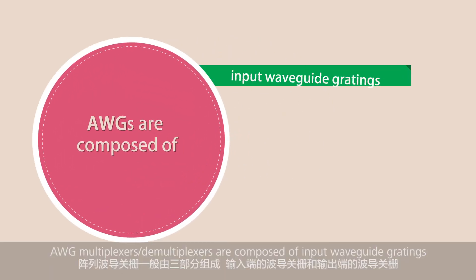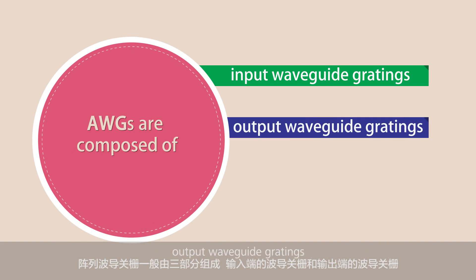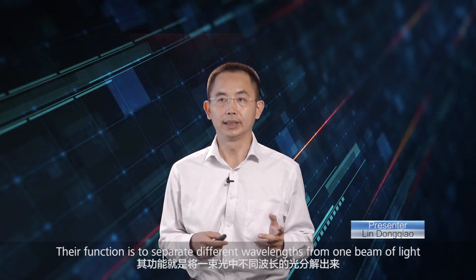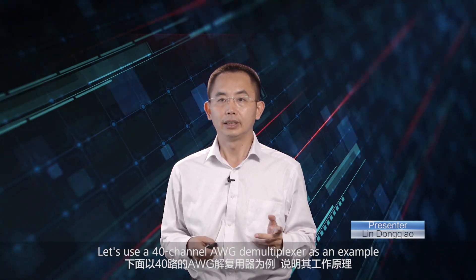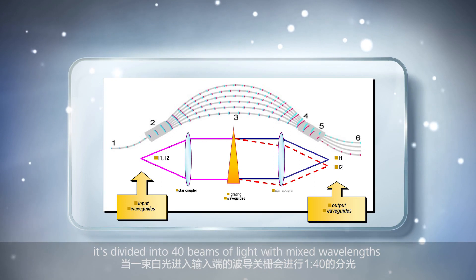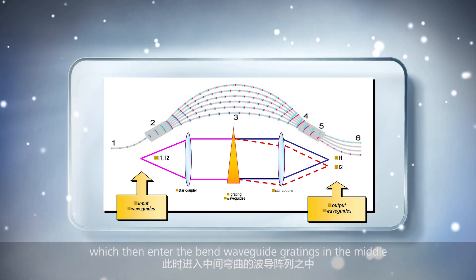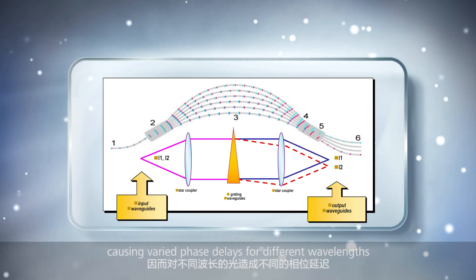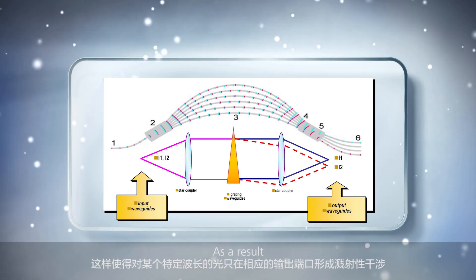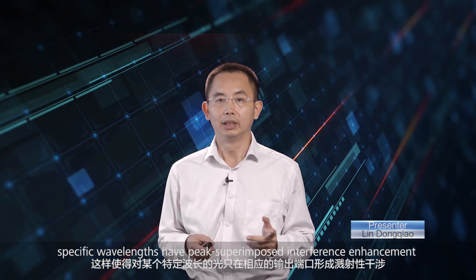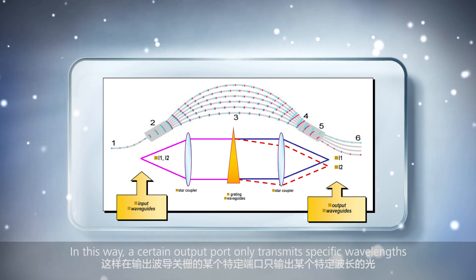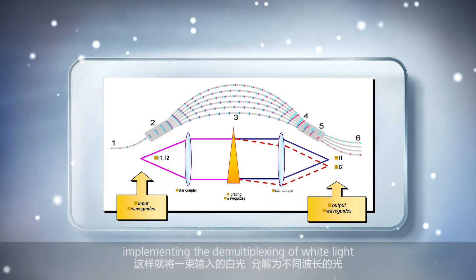AWG multiplexers and demultiplexers are composed of input waveguide gratings, output waveguide gratings, and slab or bend waveguide gratings in the free propagation area in between. Their function is to separate different wavelengths from one beam of light. In a 40-channel AWG demultiplexer, when a beam of white light enters the input waveguides, it's divided into 40 beams with mixed wavelengths, which enter the bend waveguide gratings in the middle. Each channel of bend waveguide gratings has a different channel length, causing varied phase delays for different wavelengths. As a result, specific wavelengths have peak superimposed interference enhancement at corresponding output ports and peak trough interference cancellation at other output ports, so that a certain output port only transmits specific wavelengths, implementing demultiplexing.